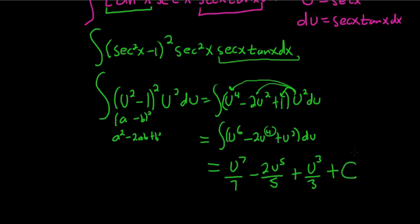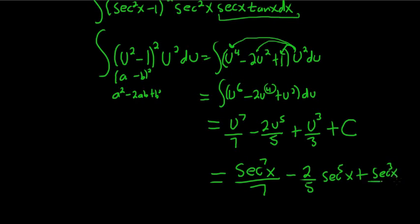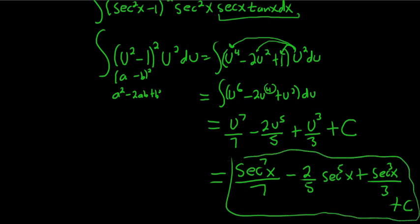The last thing to do is replace u with what it actually is. So u is the secant function. So it's secant to the seventh power of x over 7 minus 2 fifths. I'll write it like this. Secant to the fifth power of x plus secant to the third power of x over 3 plus our constant of integration c. And that is the final answer.